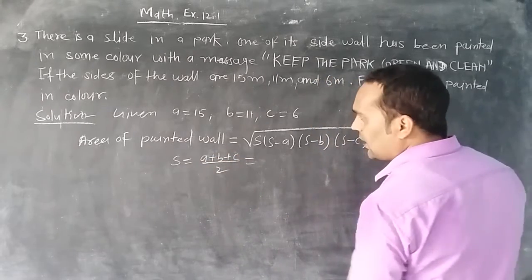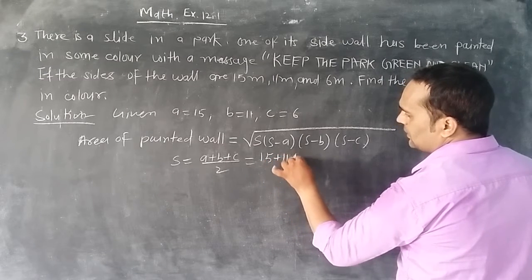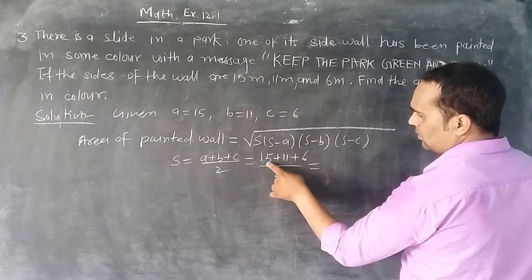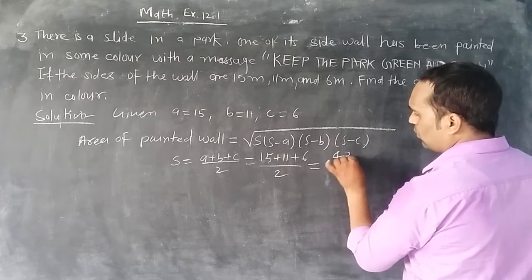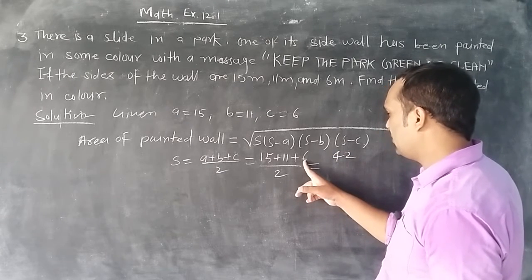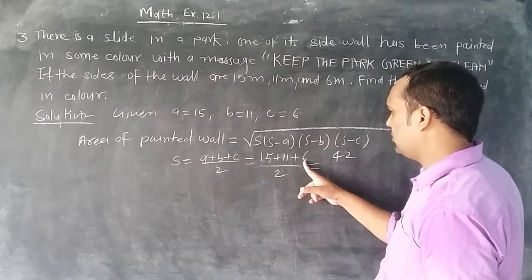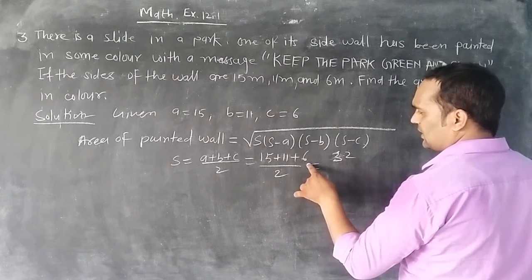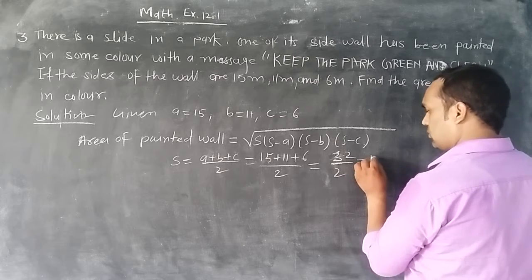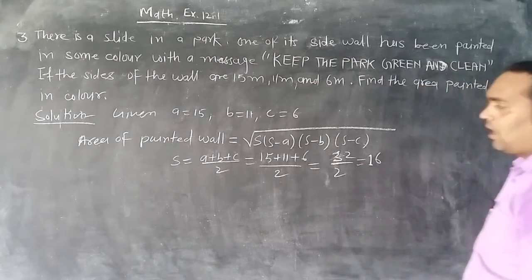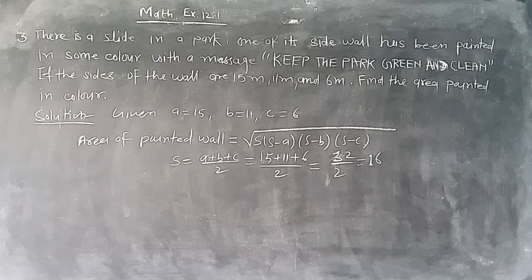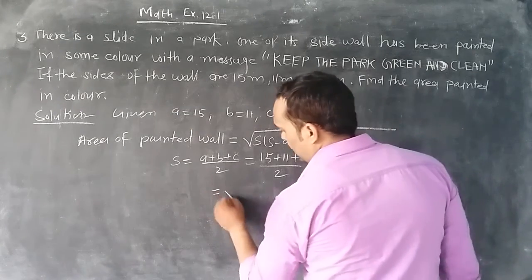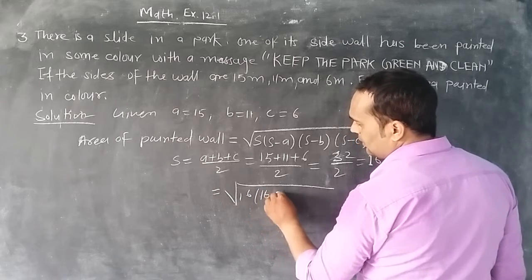s equals (15+11+6)/2. That is 32/2 equals 16. So a+b+c equals 32, divided by 2 equals 16. Now we put the value of s here.